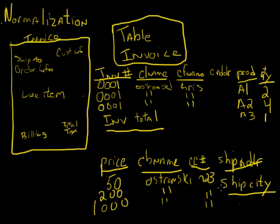This also cuts down on flexibility for slicing and dicing the information. If I want to query how many products I've sold in the last month, and I've broken products out into their own table, I only have to search that table. I don't have to search a gargantuan invoice table with all the information combined. It makes it a lot easier to have flexibility in terms of reporting and security requirements.